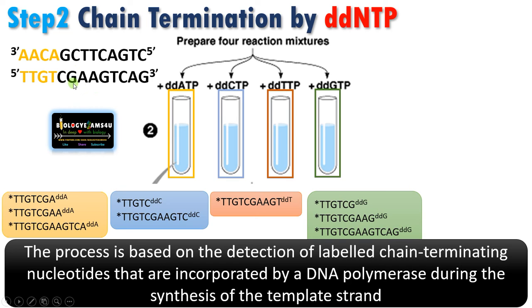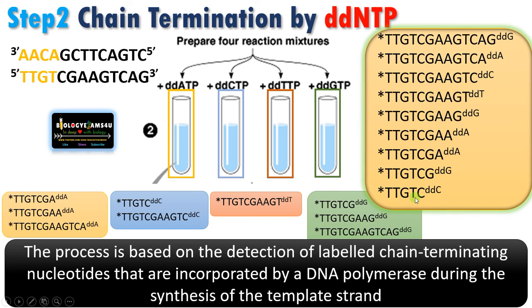In the fourth tube with ddGTP, there are three guanine positions, so whenever the dideoxy guanine nucleotide is incorporated, chain termination occurs, giving three fragments. In Sanger's procedure we are detecting the labeled chain-terminating nucleotides. All fragments are arranged by size from smallest to largest, with the last nucleotide incorporated being the ddNTP. Reading the sequence: C, G, A, A, G, T, C, A, G — this is the sequence of the complementary strand, and this is how we use ddNTPs to deduce the DNA sequence of an unknown fragment.